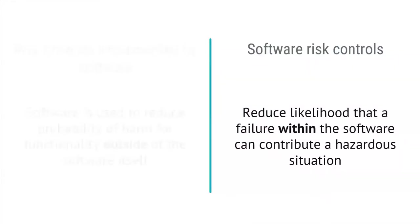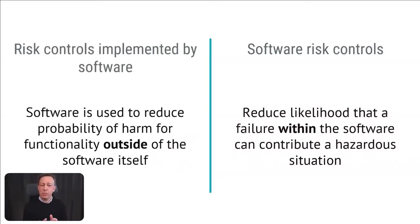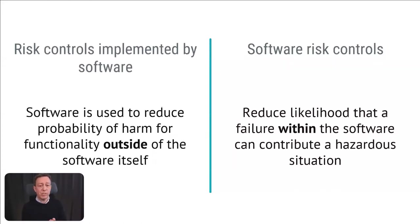A software risk control measure is used to reduce the likelihood that a failure within the software can contribute to a hazard situation. If the steam sterilizer warning is an important one, we should assess whether we can add software risk control measures to that functionality — for example, adding priorities in the software to ensure the warning is always displayed on top of other messages. So: risk controls implemented by software reduce risks outside the software; software risk control measures reduce the likelihood of failures within the software.